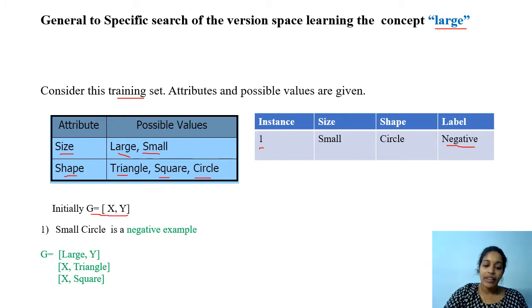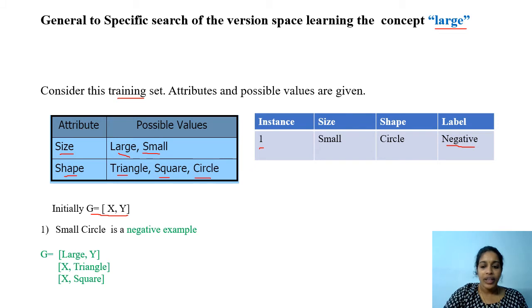The algorithm initially starts from {x, y}, meaning any value is acceptable. On getting this first instance, which is negative, we have to make changes in hypothesis G, because our current hypothesis G accepts this instance as positive. So we have to make a specialization.